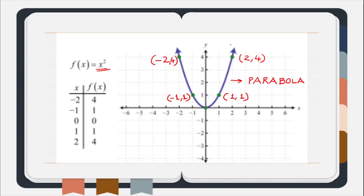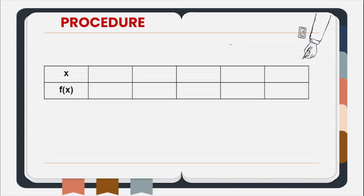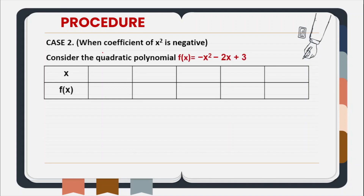Now in a similar manner, let us consider case 2, that is when the coefficient of x square is negative. Here I have considered a quadratic polynomial where the coefficient of x square is negative — see there is a negative sign in front of x square. For x equal to 0, can you find the value of this f(x)? When x is 0, the only number remaining is 3, so the value of f(x) is 3.